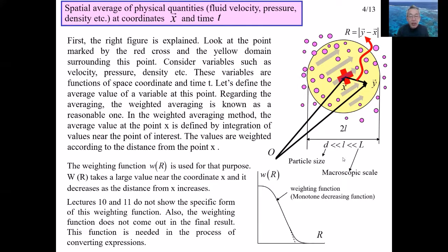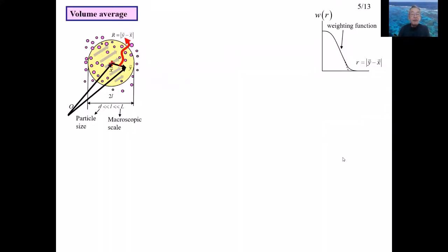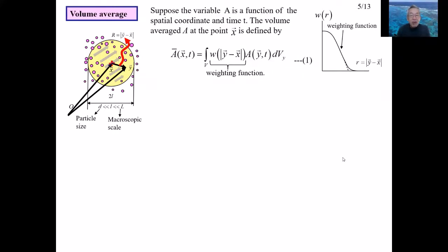Lectures 10 and 11 do not use the specific form of this weighting function, and it does not appear in the final result. This function is needed only in the process of converting expressions and equations. The average described from now is the weighted average. Suppose an arbitrary physical variable A is a function of spatial coordinate and time t. The volume average A-bar at x is defined by equation 1, where the weighting function W is included in the integrand.